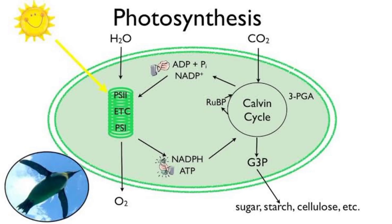During photosynthesis, light energy is absorbed by chlorophyll and other pigments in the thylakoid membranes. This energy is then used to split water molecules into oxygen and hydrogen ions. The hydrogen ions combine with CO2 to form glucose through the Calvin cycle, while the oxygen is released as a byproduct.